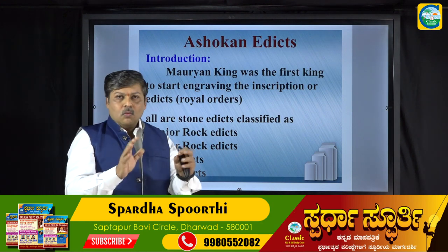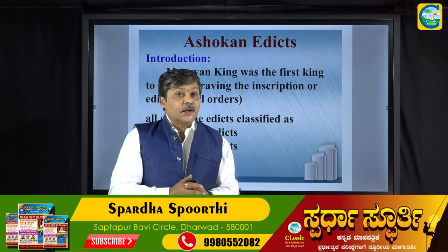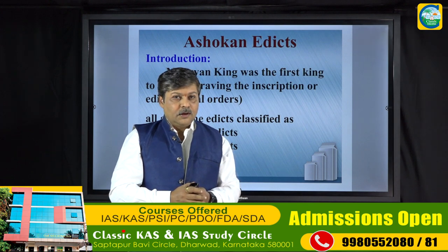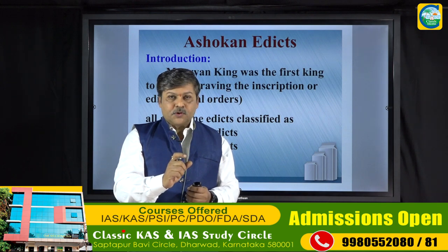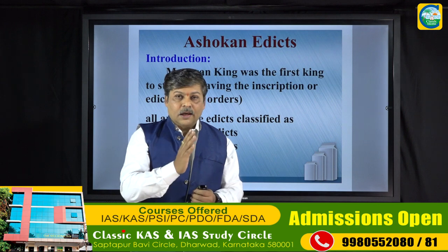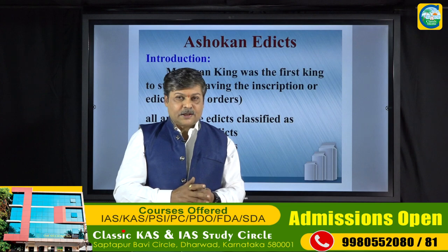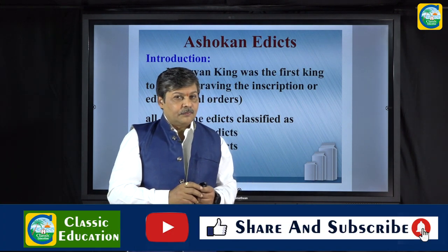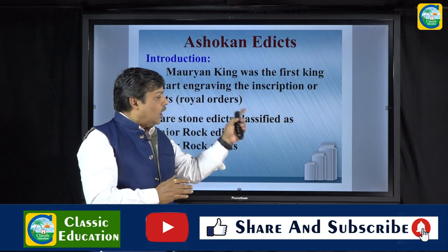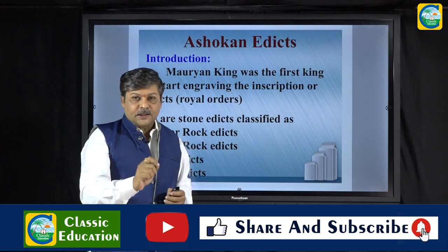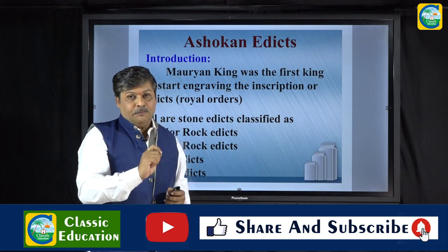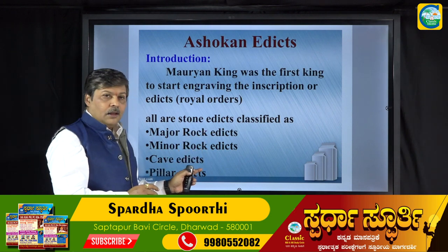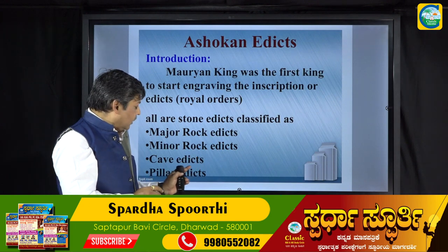Before we go further, you have to know what an inscription is. Inscriptions are engraved writings on any hard material. In Indian history, inscriptions are of two categories: stone inscriptions and copper plate inscriptions, engraved on copper plates. The Ashokan Edicts are all stone Edicts, mainly classified as Major Rock Edicts, Minor Rock Edicts, Cave Edicts and Pillar Edicts.